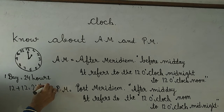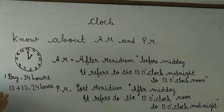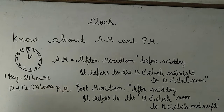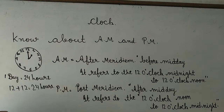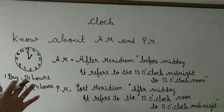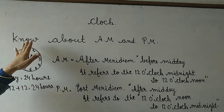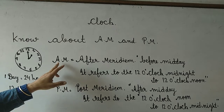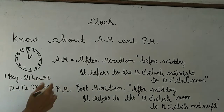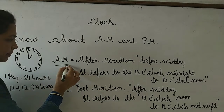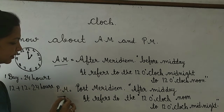Toh ab isko samjhe ke kaise, ki hume kaise pata chalega ki kab toh din hai, aur kab raath hai. Toh easy way — humne kya kiya hai, pahle se isko divide kar liya hai, ki day ko joh hai two parts mein divide diya gaya hai: A.M. aur P.M.